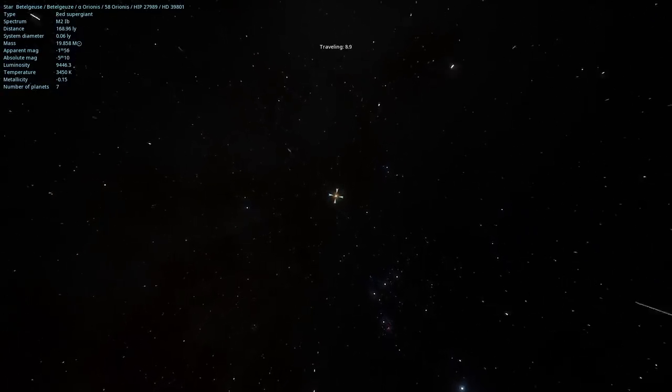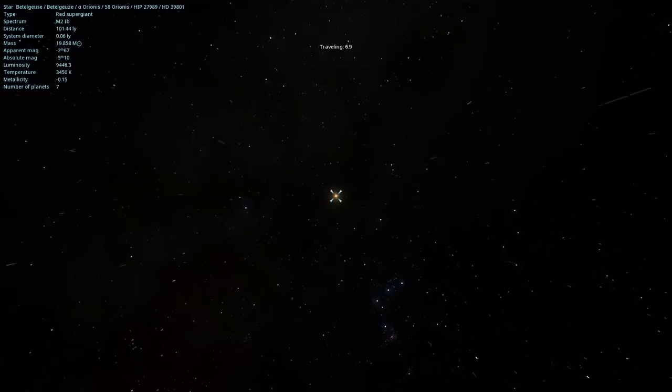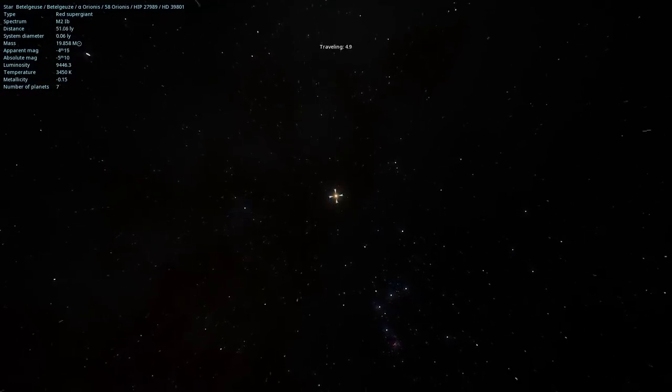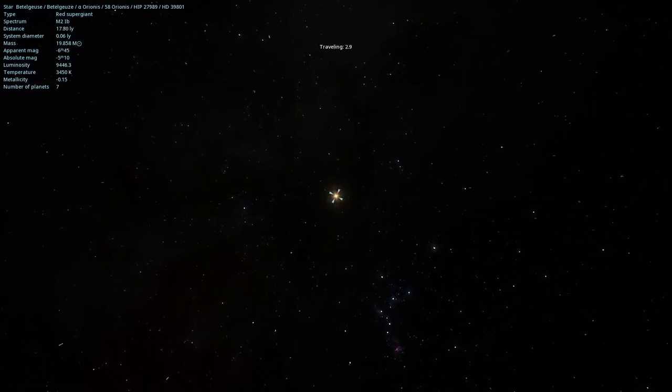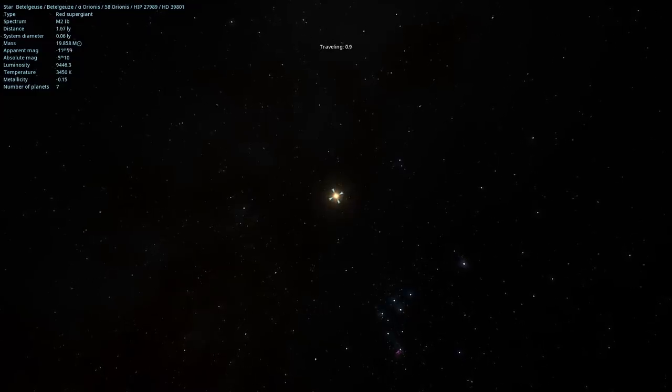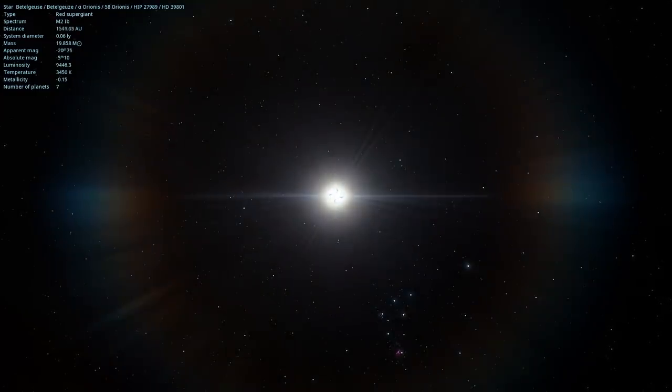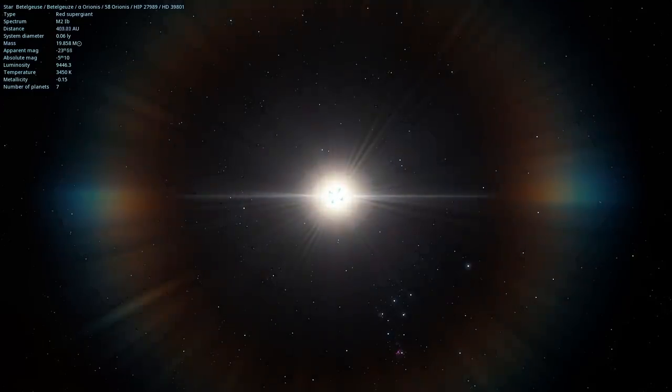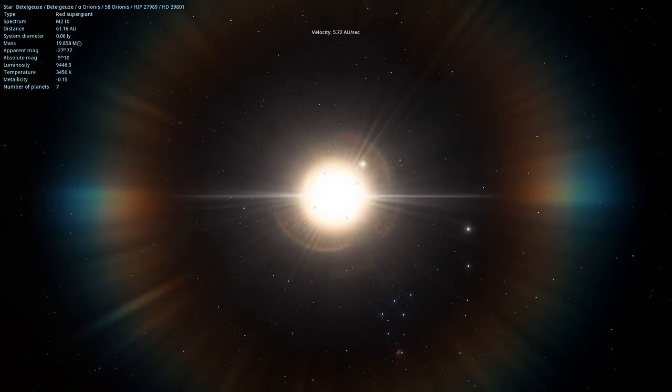So Betelgeuse is a variable star. It changes brightness over time. It's also a red giant that is more or less at the end of its lifetime. The stars become red giants after they burn through the hydrogen in their main sequence and start burning other elements. So Betelgeuse is expected to become a supernova at some point. Big changes in the brightness make people think that this might be happening sooner rather than later.